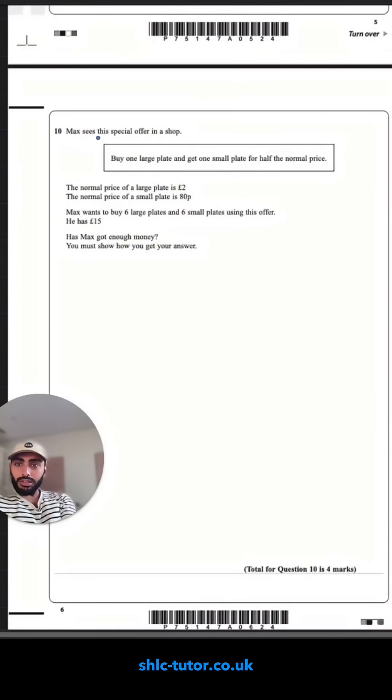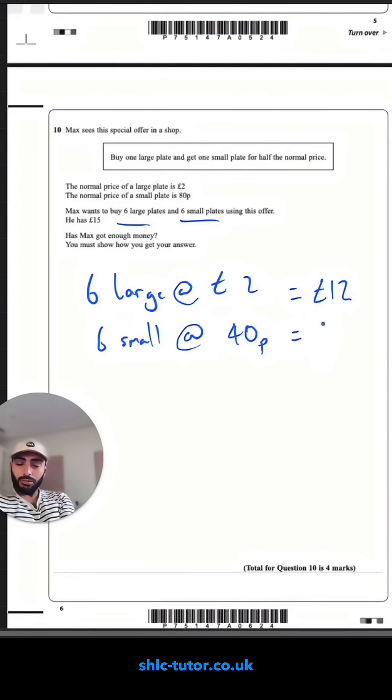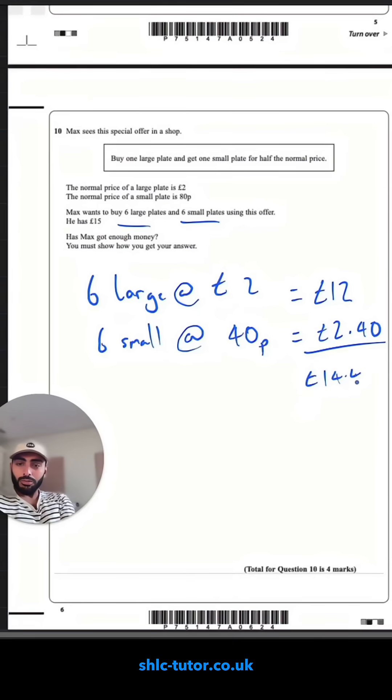Final question. Max sees this special offer in a shop. Max wants to buy six large plates, six small plates using this offer. He's buying six large at £2 and get one small plate for half the normal price. The normal price of a small plate is 80p. So six small at 40p. Six times two is 12, six times 40 is 240. That's in pence of £2.40. Add those together. He's spending £14.40. He has £15. Does he have enough money? Yes. He has 60p extra.